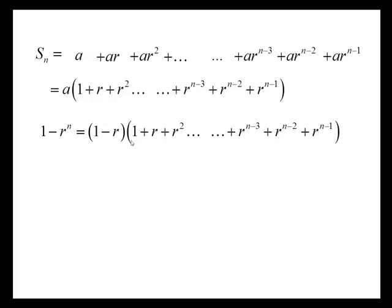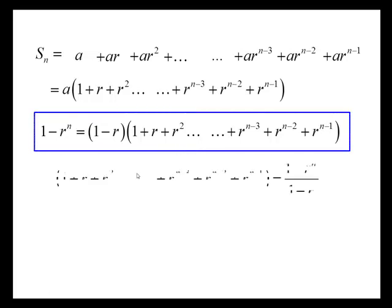Now we're interested in the bracket, so let's find out what the bracket is worth by turning this round. The bracket is this: if we divide by one minus r, we've just rearranged the formula.